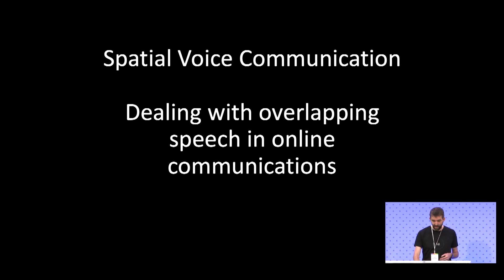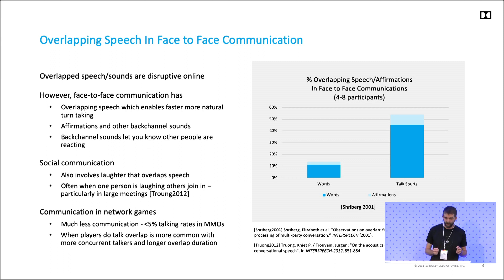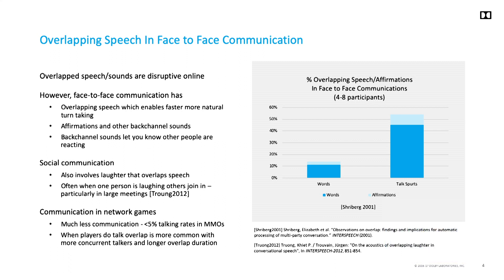In online communications, you want to avoid overlapping speech as much as possible, so everyone goes on mute. However, in face-to-face communications there is a lot of overlapping speech. Overlapping speech enables much faster interactive turn-taking, and it also enables affirmations during the conversation. Those affirmations enable you, as a speaker, to understand what's happening with the people you're speaking with. If you're in an online conference and everyone's silent, you wonder what's going on.